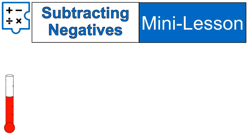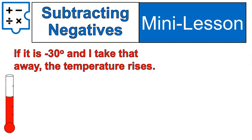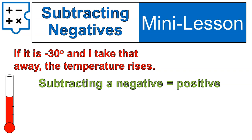Now we're getting into the last example — the tricky one you'll always see on math tests: subtracting negatives. If it's negative 30 and I take that away — if I take away negative 30 degrees — the temperature is actually rising. I'm taking away a negative. Subtracting a negative means a positive. It's like if there's someone in your circle of friends who's really negative and you take them away, the conversation gets a lot more positive. Or if you take away a debt — I owe $5, so my money is negative $5, and I take that debt away — I'm actually increasing the amount of money I have.